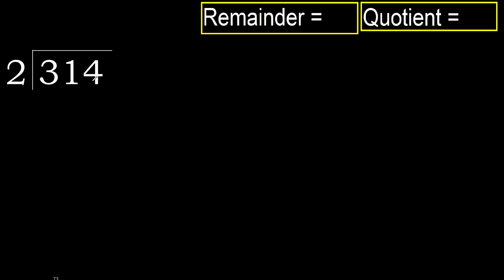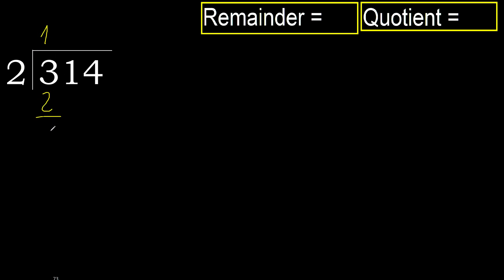314 divided by 2. 3 is not less, therefore work with 3. 2 multiplied by which number is nearest to 3 but not greater? 2 multiplied by 2 is 4 — is greater. 2 multiplied by 1 is 2 — is not greater. Ok, subtract. Next.